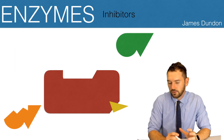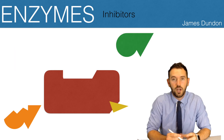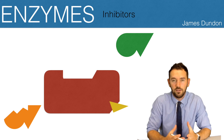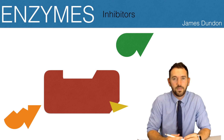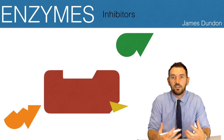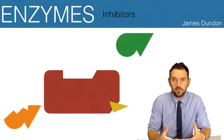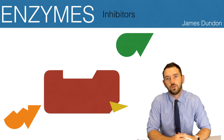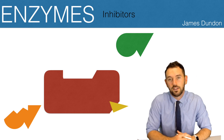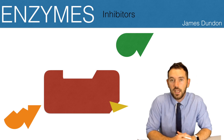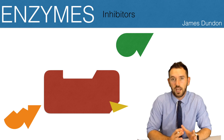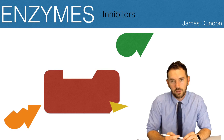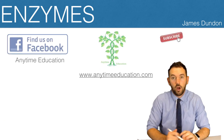So there are two types of inhibitors. Competitive inhibitors, which compete for the active site and if successful will block it. And non-competitive inhibitors, which bind to an allosteric site and thereby cause a change to the active site, making it no longer complementary for our desired substrate.